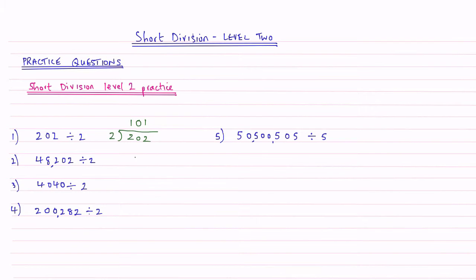If we take question 2 now, curly brace and our line, put our number underneath. So that's 48,202. We're dividing that by 2. How many 2s into 4? Well that goes twice.